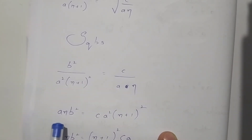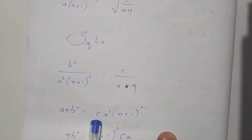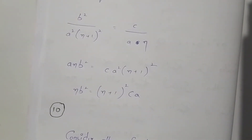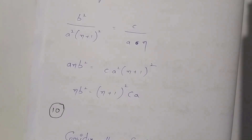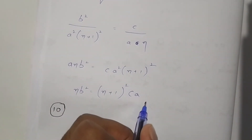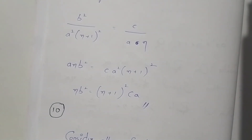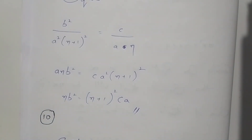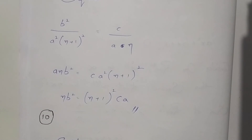On cross multiplication, we get an·b² = c·a²·(n+1)². Therefore the condition for the quadratic equation to have roots alpha and n·alpha is: nb² = (n+1)² · ac. This is the condition so that one root is alpha and the second root is n times the other.